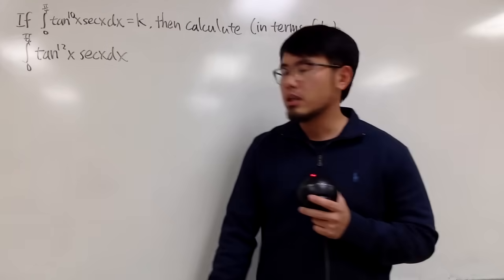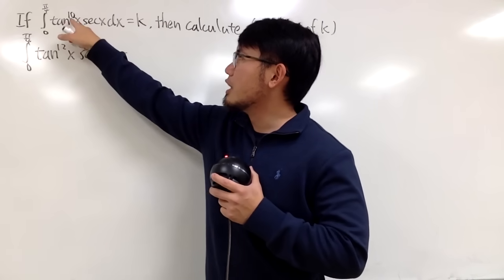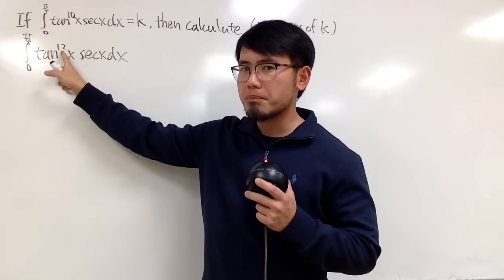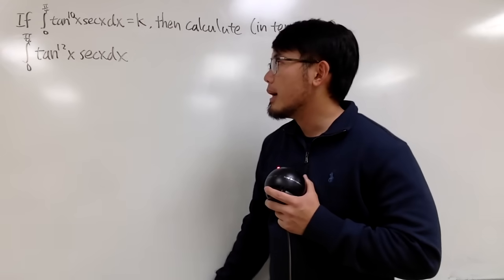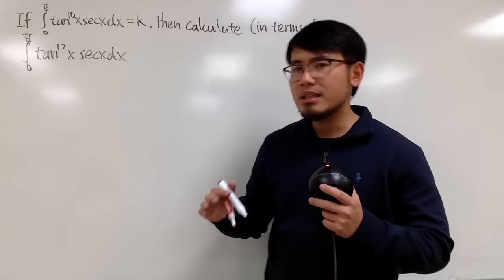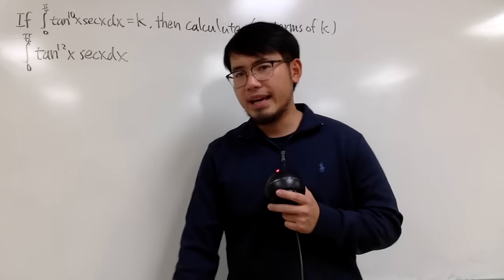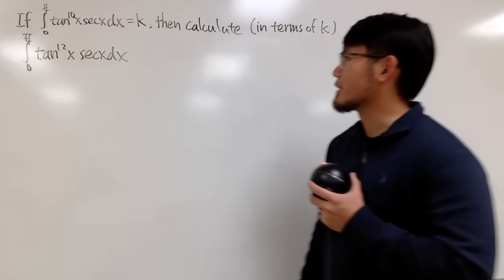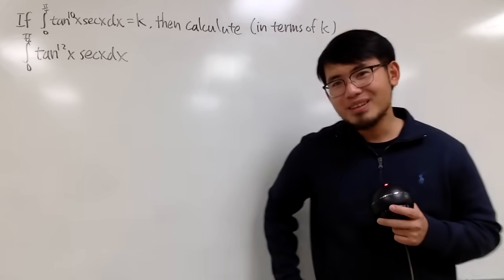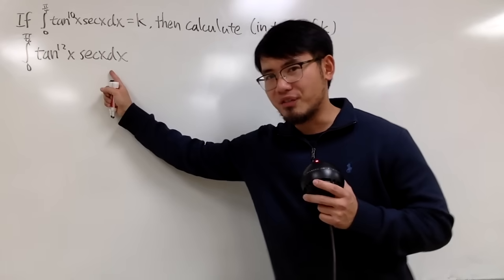As we can see, the difference between this and that is just: here we have the tenth power, but this is the twelfth power. So we must come up with a connection between this and that, and the answer shall be in terms of k. How can we do that? Well, as always, be sure to pause the video and try this first.